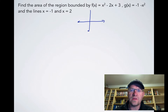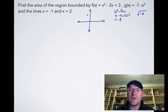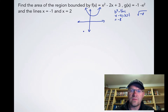We need to draw a sketch. Both functions are parabolas. For f of x equals x squared minus 2x plus 3, checking the discriminant: b squared minus 4ac gives 4 minus 4 times 1 times 3, which equals negative 8. Since it's negative, there are no x-intercepts, so this parabola opens upward and doesn't touch the x-axis.